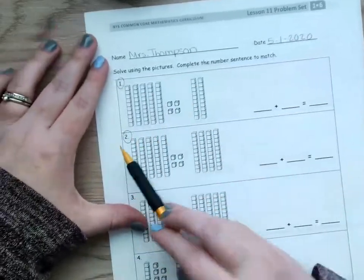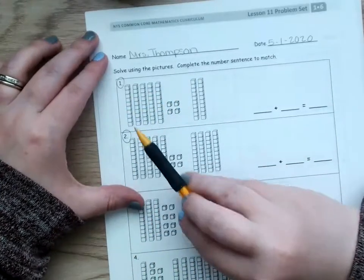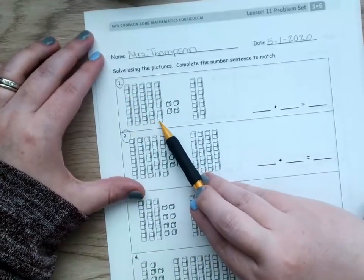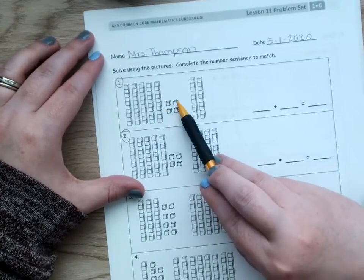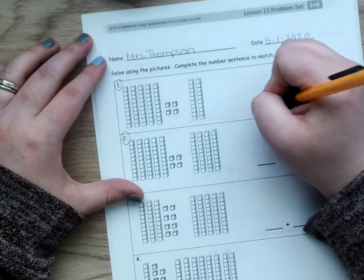I see a group of 10s and 1s on this side. So, I'm going to count them up first. I've got 10, 20, 30, 40, 50, 51, 52, 53, 54. Okay? So, on my first line in my number sentence, I'm going to write 54.